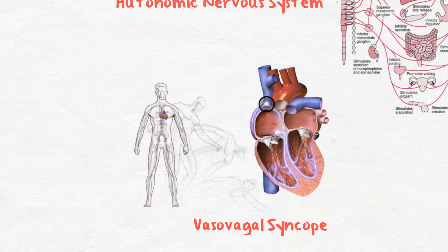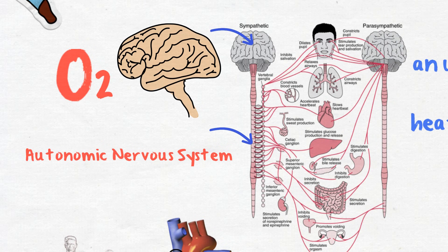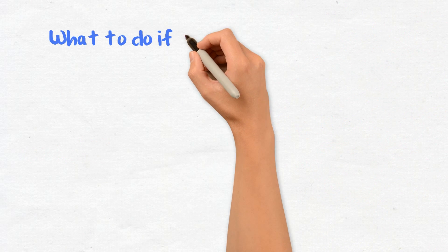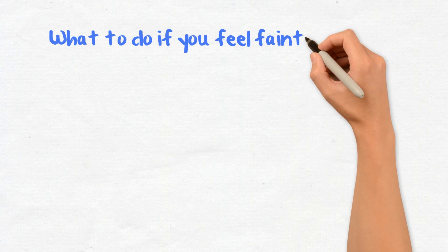This is called vasovagal syncope. Syncope is a mechanism used by the brain to help us survive. If brain blood and oxygen levels drop considerably, the brain immediately shuts down all other non-vital parts of the body so that resources can focus primarily on vital organs.